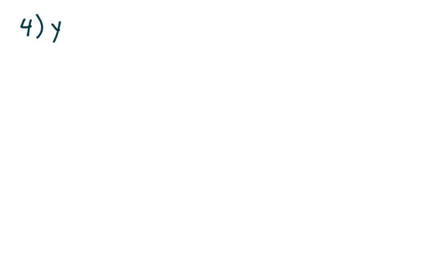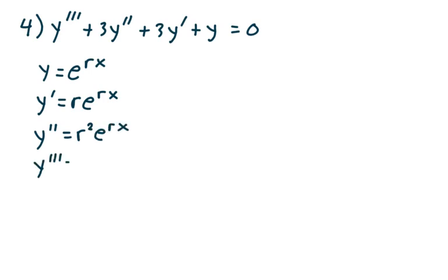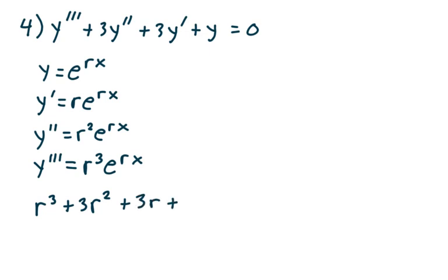In example 4, suppose we had y triple prime plus 3y double prime plus 3y prime plus y equals 0. Again, let y equal e to the rx. y prime is r e to the rx, y double prime is r squared e to the rx, and y triple prime is r cubed e to the rx. Making my substitution and dividing through by e to the rx, I get r cubed plus 3r squared plus 3r plus 1 equals 0.